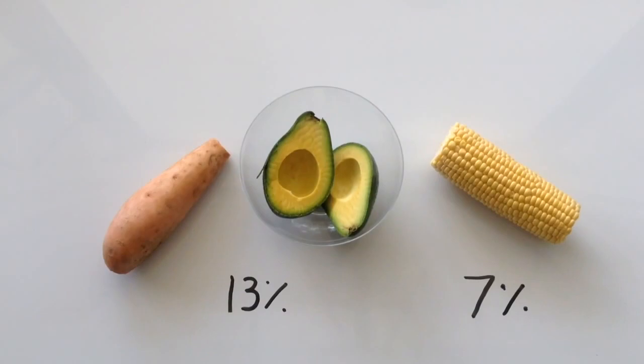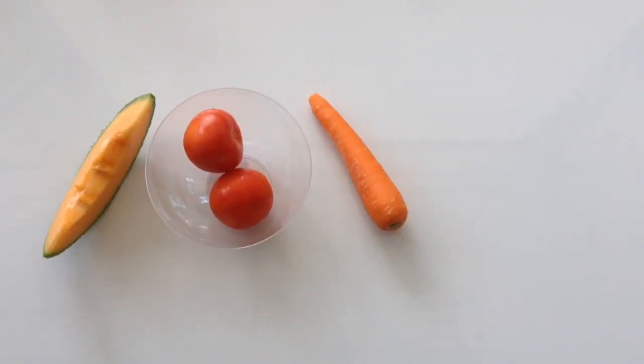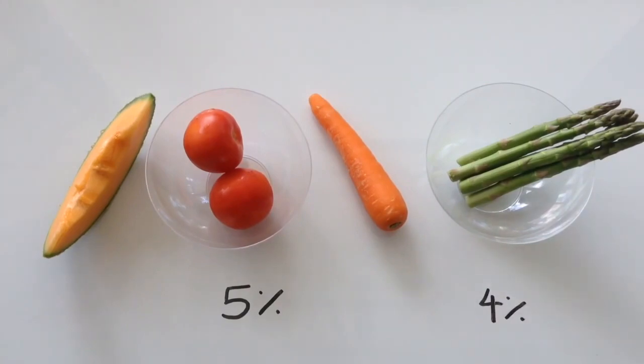A medium sized slice of cantaloupe, two small tomatoes and a medium sized carrot all have about 5% of your daily value. And a half a cup of cooked asparagus has about 4%.